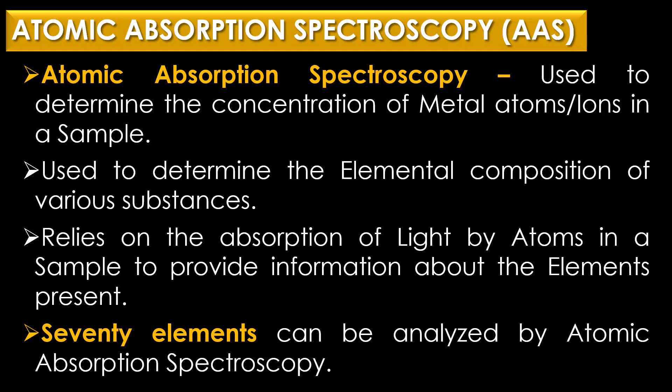Atomic absorption spectroscopy, or AAS, is a powerful analytical technique used to determine the concentration of metal atoms or ions in a sample. It is used to determine the elemental composition of various substances, and relies on the absorption of light by atoms in a sample to provide information about the elements present. It is the most powerful technique for analysis of elements, and approximately 70 elements can be analyzed by AAS.